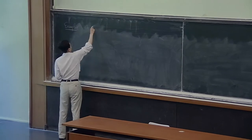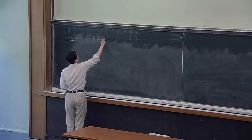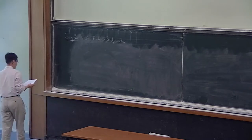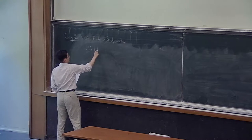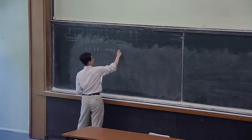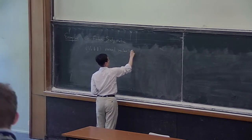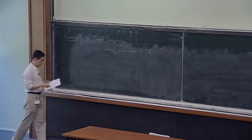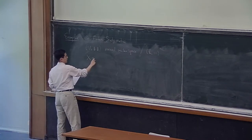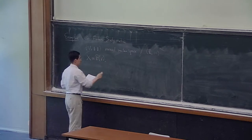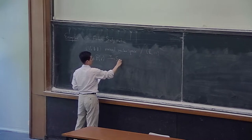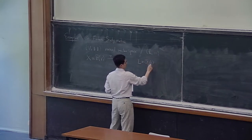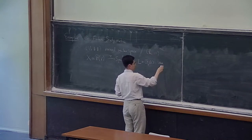Le premier exemple est la métrique de Fubini-Study. On commence avec un espace de Berkovich et un corps K muni d'une valeur absolue. On suppose que K est complet. Dans ce cas, vous pouvez prendre l'espace projectif associé à V, on note π le morphisme canonique vers Spec K, et on prend L qui est O_V(1), qui est le faisceau universel.